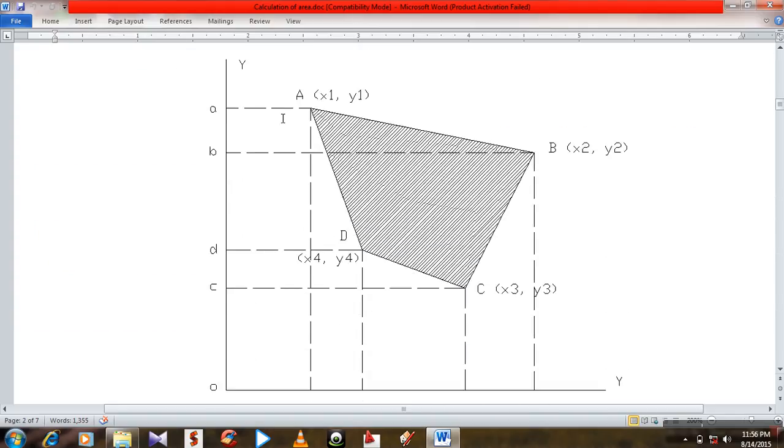A figure A, B, C, D at a closed traverse. They can have a coordinate which is x1 y1, b x2 y2, c x3 y3, x4 y4.